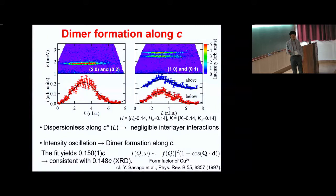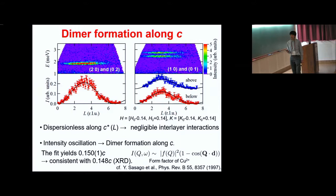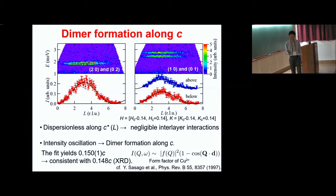This kind of oscillation is characterized by the dimer structure factor shown by the equation, where F(q) is the form factor of Cu2+, and d is a vector connecting the two spins forming a dimer. This equation well explains the intensity modulation. The fit gives a d vector of 0.15 of the C-axis length, which is consistent with that expected from the single crystalline XRD diffraction experiment.